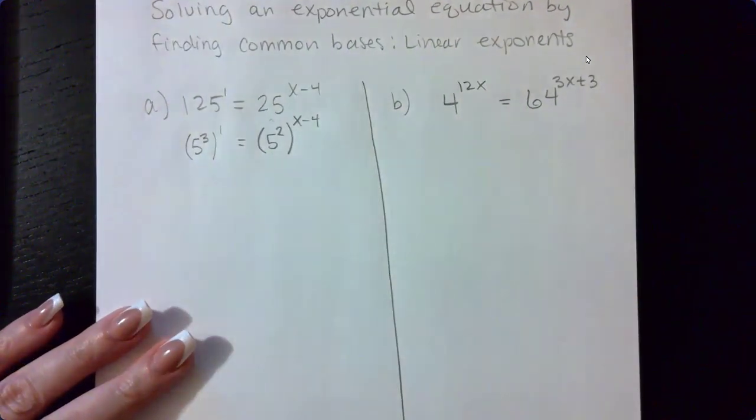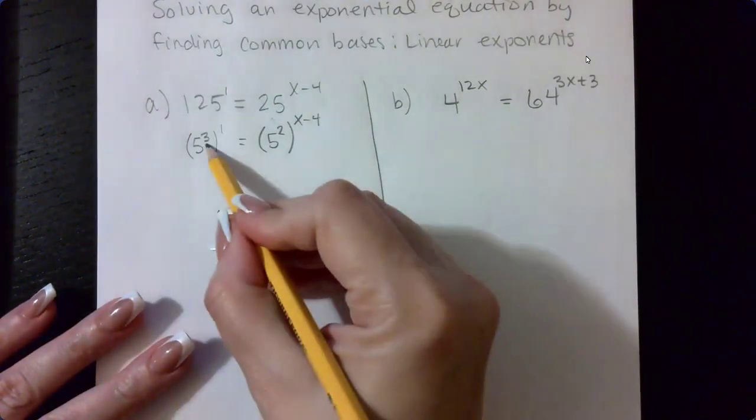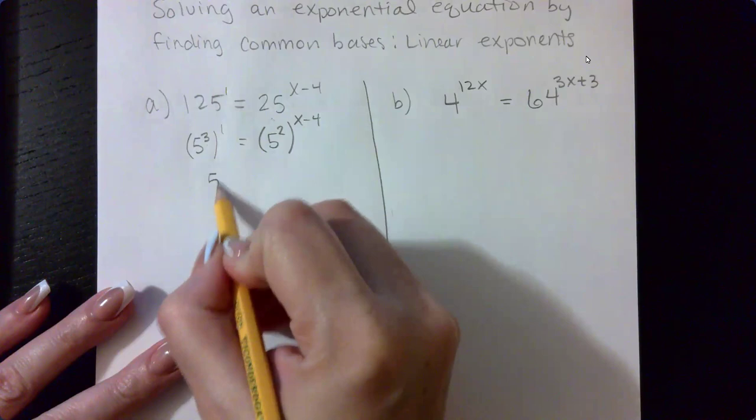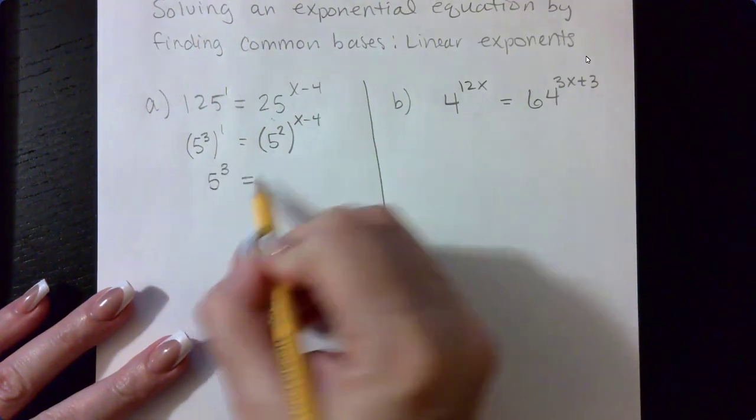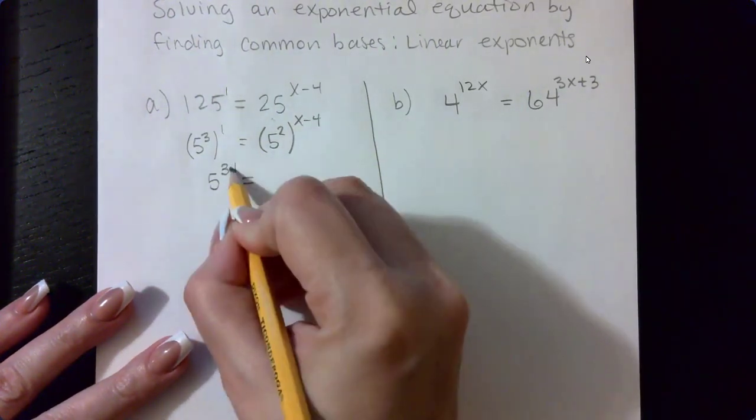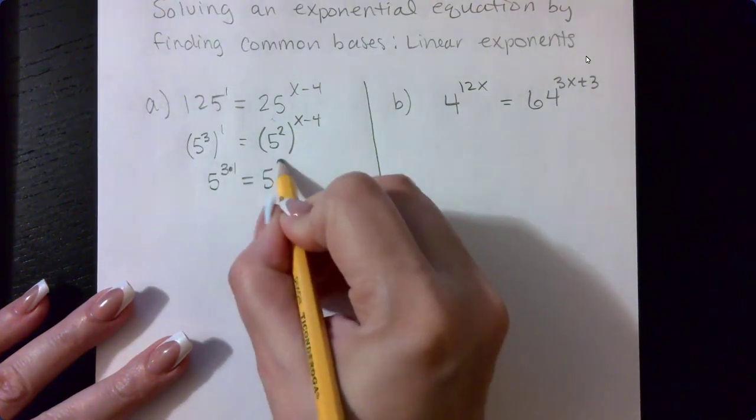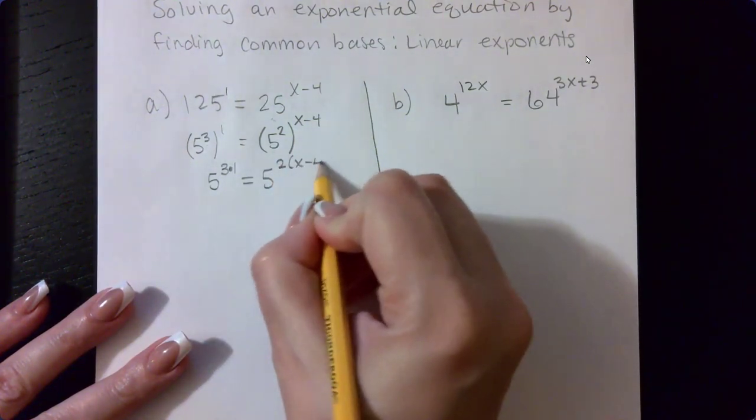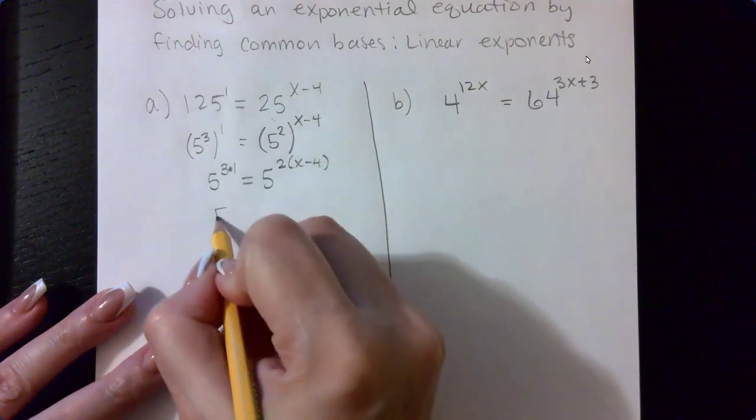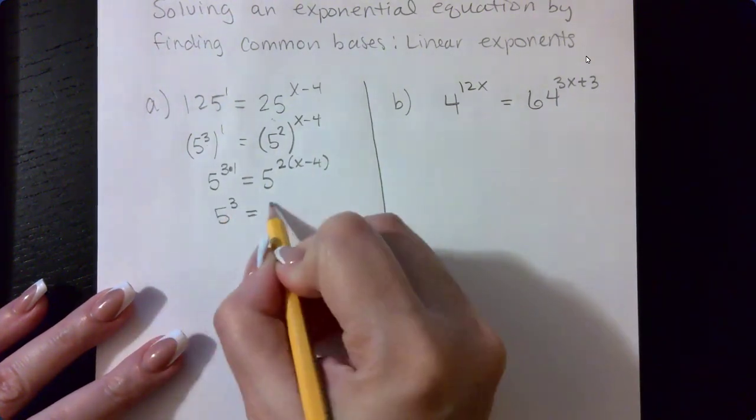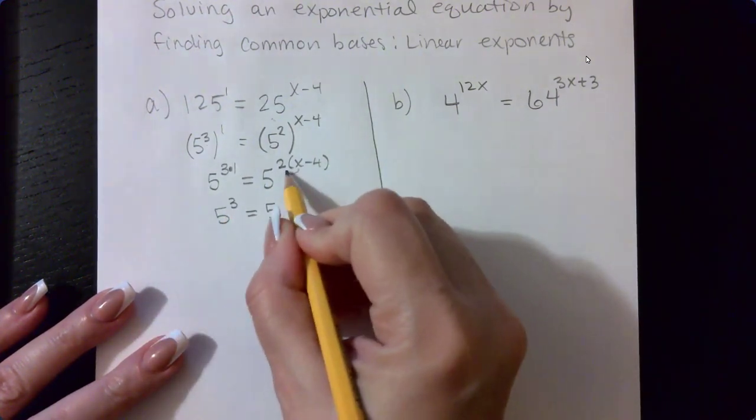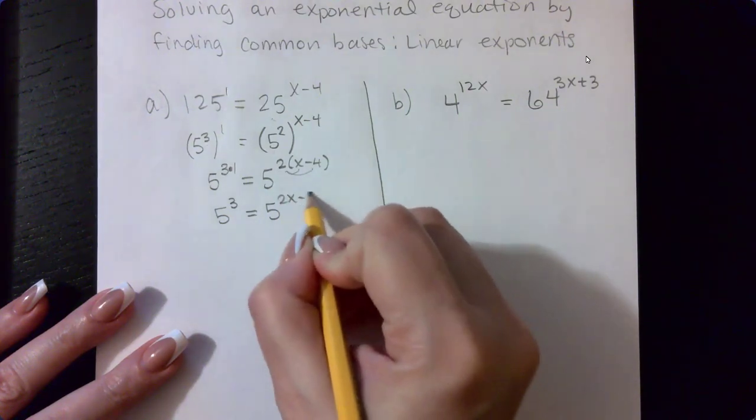Now, remember our properties for exponents. An exponent raised to an exponent means you multiply those exponents. And the same thing here. We would take this two and multiply it by X minus four.